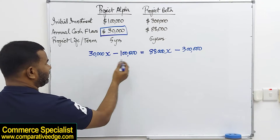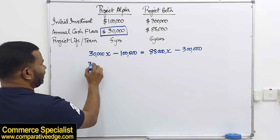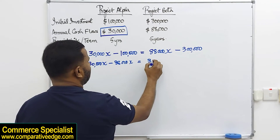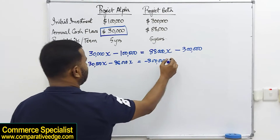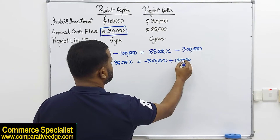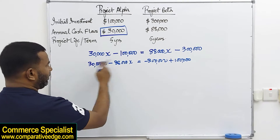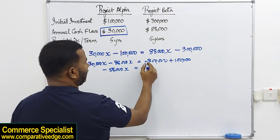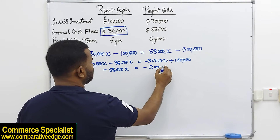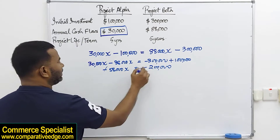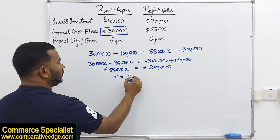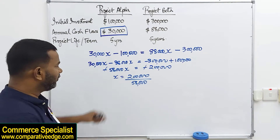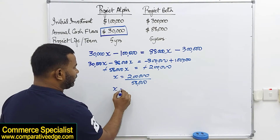Solving the equation: bring terms across so we get 88,000X minus 30,000X equals 300,000 minus 100,000, which simplifies to 58,000X equals 200,000. Therefore X equals 200,000 divided by 58,000, giving X equal to 3.448. This value of 3.448 is the annuity factor.